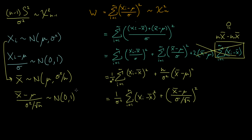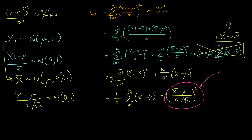We established that when we take the distribution of sample means, minus the mean of that distribution and divide by the standard deviation of that distribution, we get a standard normal distribution. Here we've got that standard normal distribution but squared. So we're thinking in the back of our minds that this object is distributed as a chi-square distribution with one degree of freedom.